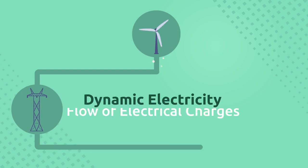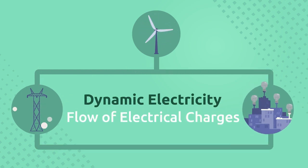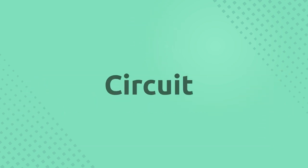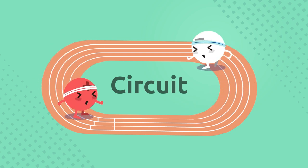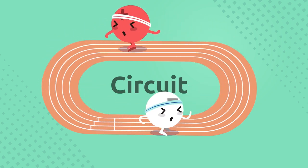Dynamic electricity is the flow of electric charges. Just as water flows in a river, so do electrical charges in a cable. In order for electrical charges to flow continuously, we need a circuit. A circuit is a closed path in which electrical charges travel along.